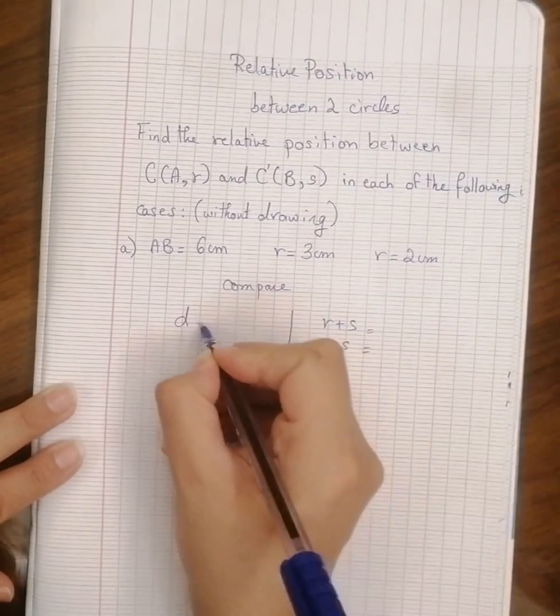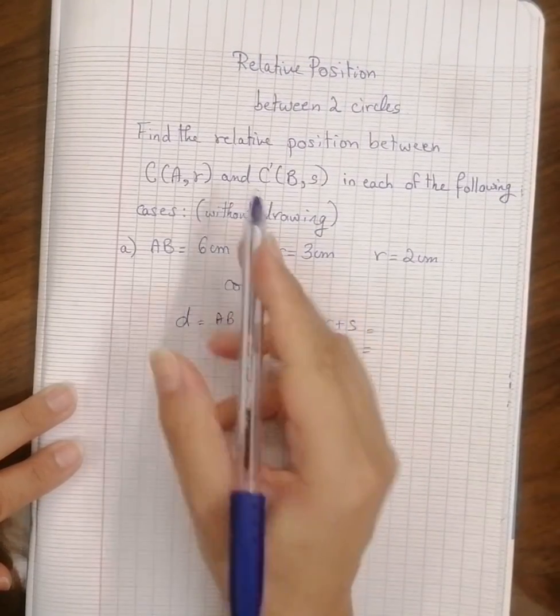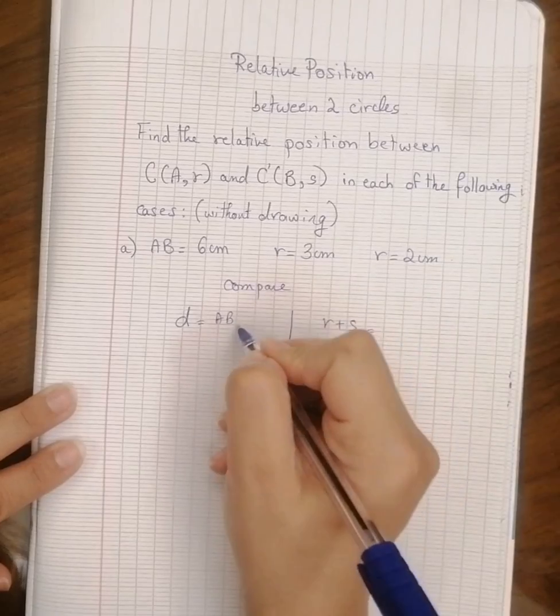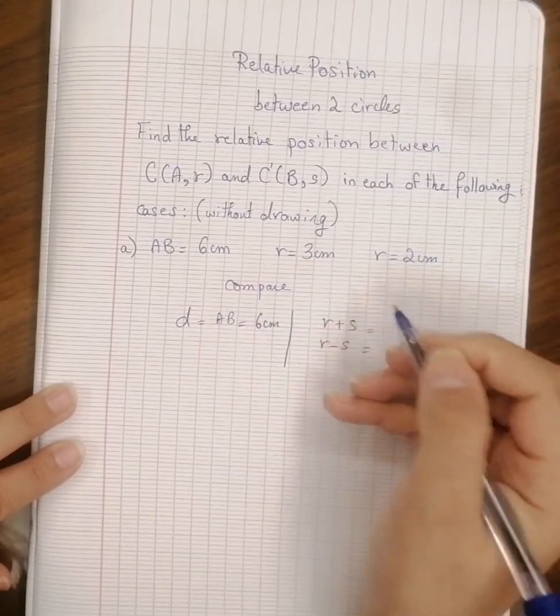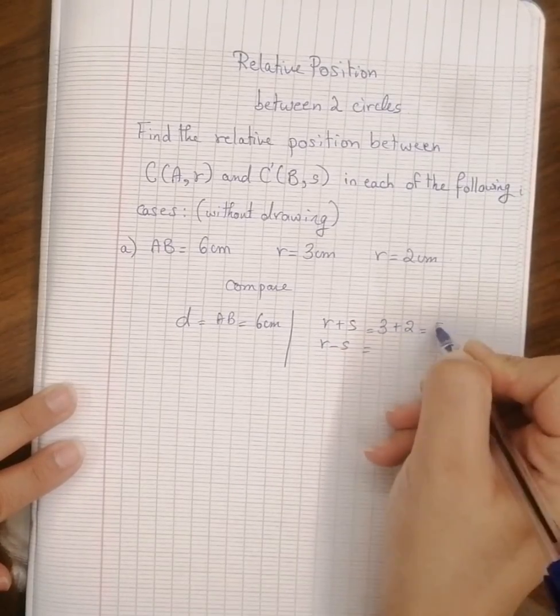Let us get these values. What is the distance? It is AB from the center to the center - it is 6 cm. And what is r plus s? In this case it is 3 plus 2, we get 5 cm.